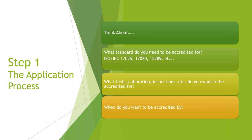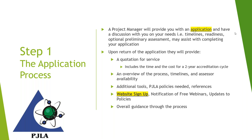What standard do you want to be accredited for? If your lab is typically 17025, there are sometimes additional supplemental requirements above 17025 — additional standards that we offer. Think about the standard, your test list, and when you want to be accredited by. Once you contact us, we assign particular project managers to give you a call and talk to you about the process. They'll provide you with an application for accreditation for whatever standard is appropriate.